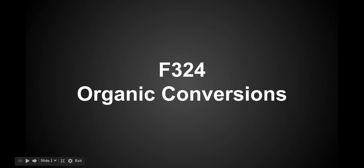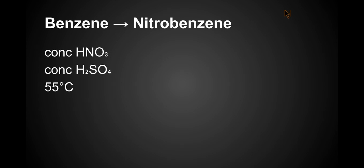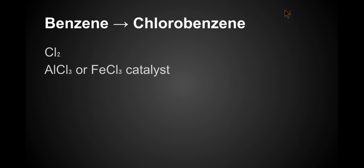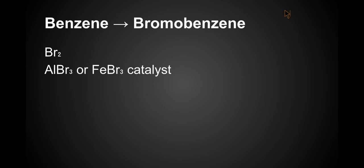In this video I'm looking at the organic conversions for F324. Benzene to nitrobenzene: concentrated nitric acid, concentrated sulfuric acid, 55 degrees C. Benzene to chlorobenzene: chlorine and either an AlCl3 or FeCl3 catalyst. Benzene to bromobenzene: bromine and AlBr3 or FeBr3 catalyst.